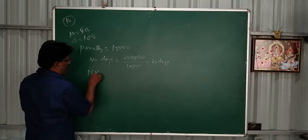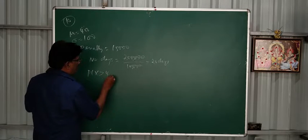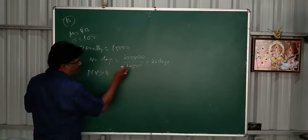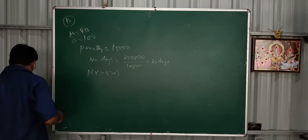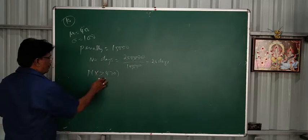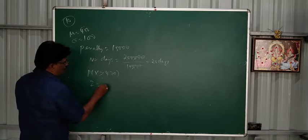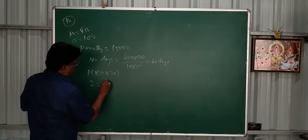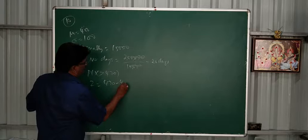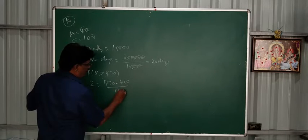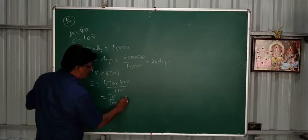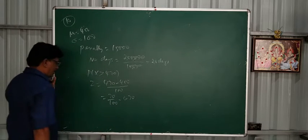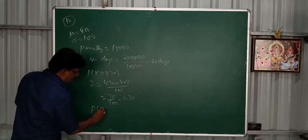About 470 minus 400 by 100, 70 by 100, 0.70. P of Z greater than 0.7.